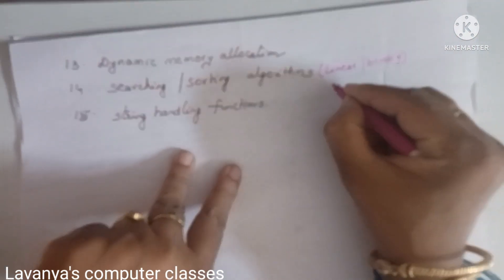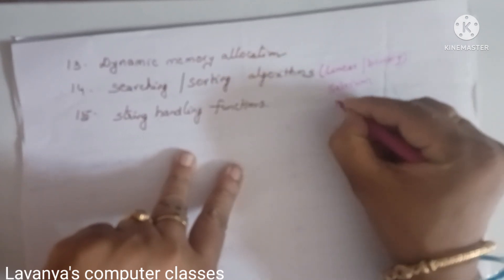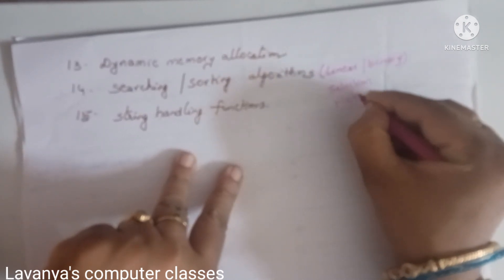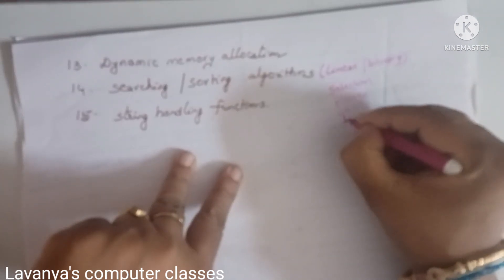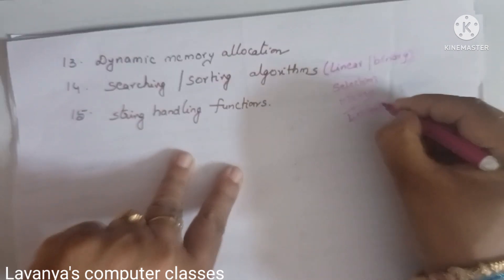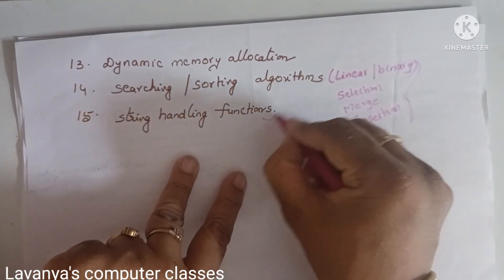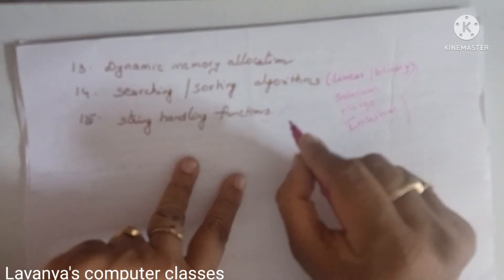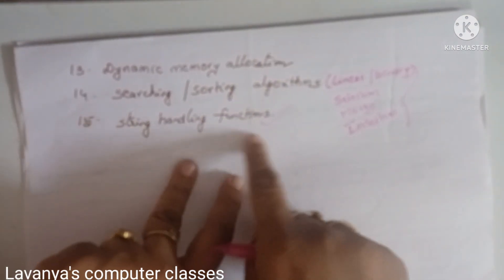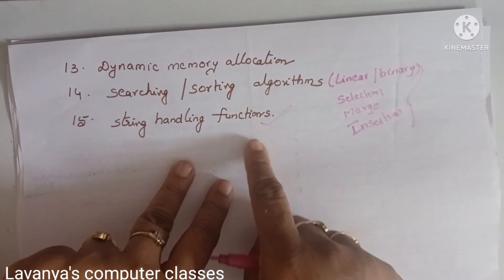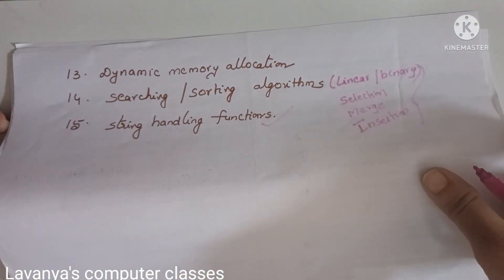For searching, learn linear search and binary search with numerical examples. For sorting, there are three techniques: insertion sort, selection sort, and bubble sort — learn all three with numerical examples and programs. Finally, string handling functions: what is a string, what are the string handling functions — learn everything with at least one program explained in detail.